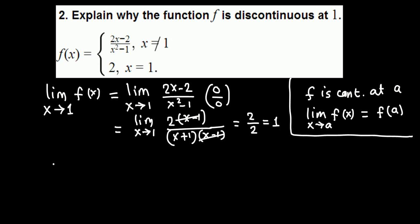But the function value at 1, when x is exactly 1, is given by the second piece, which is 2. The limit exists and the limit value is 1, but the function value also exists at 1 and equals 2. These two numbers are not the same, so the limit value is not equal to the function value. Therefore, the function f is discontinuous at 1.